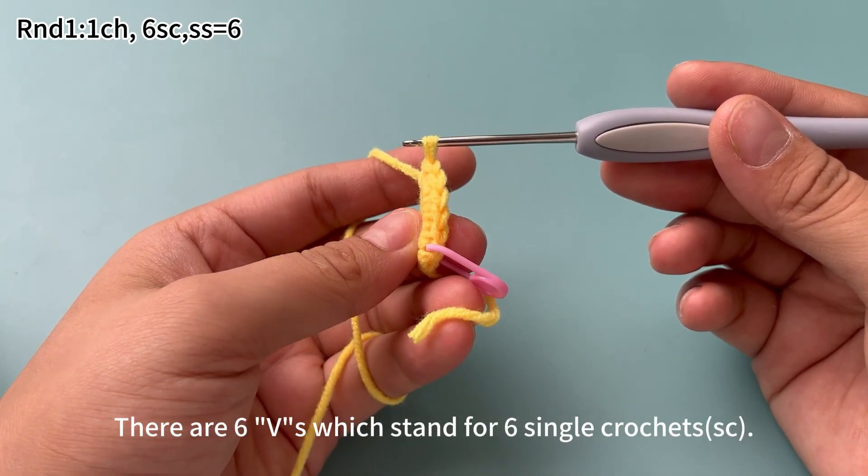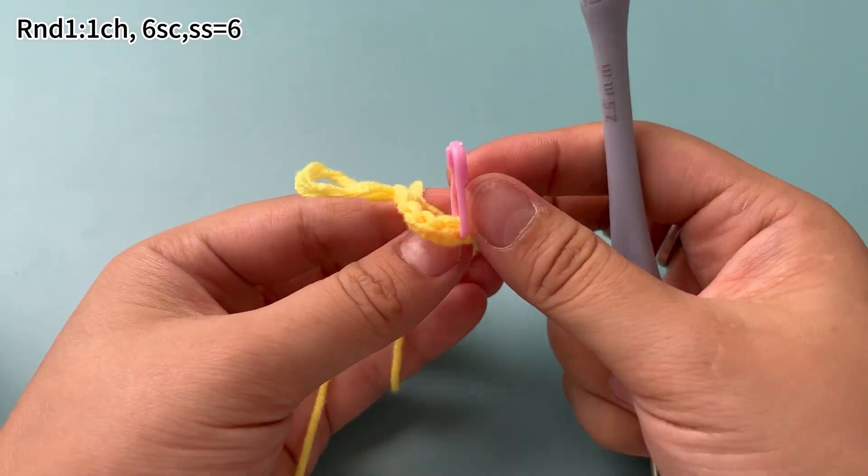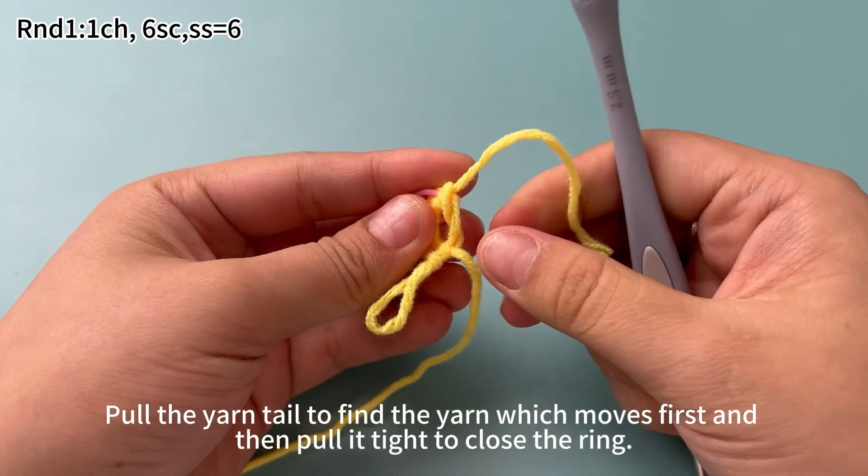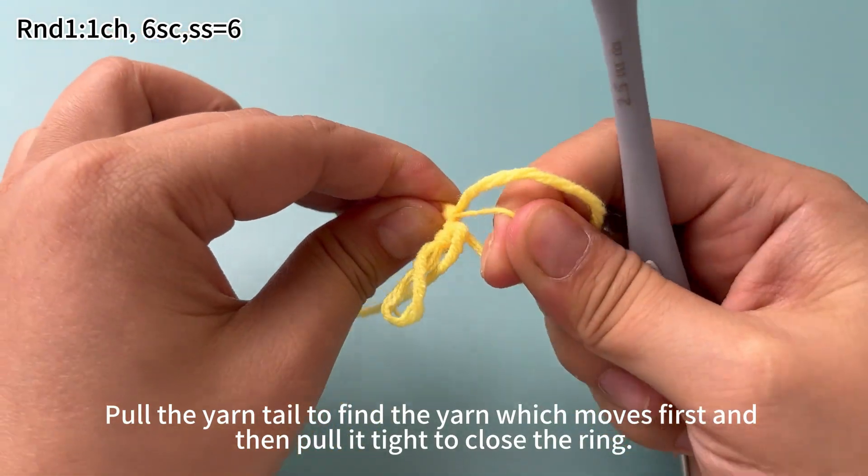There are 6 v-s which stand for 6 single crochets. Pull the yarn tail to find the yarn which moves first and then pull it to tie to close the ring.